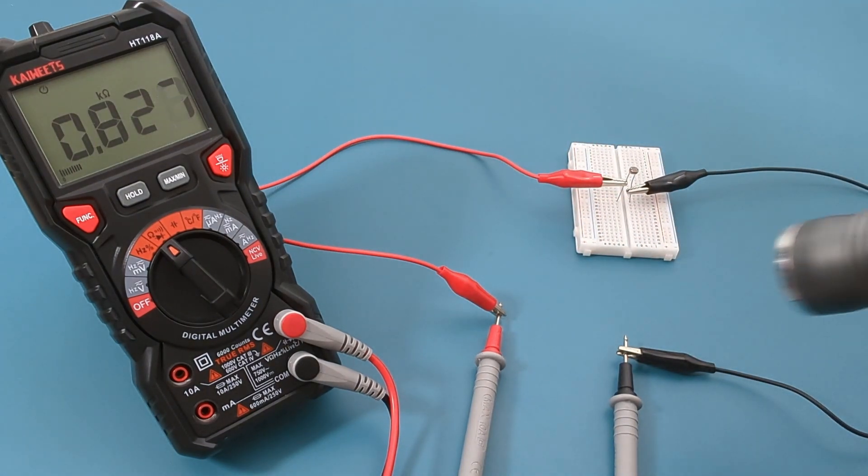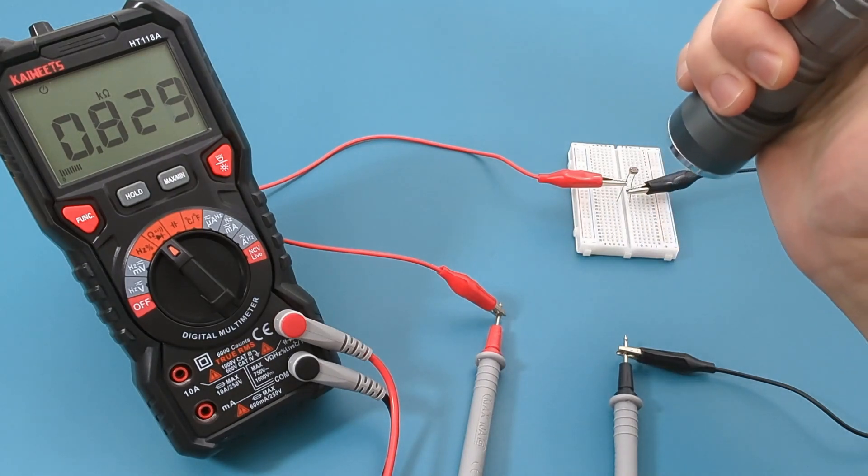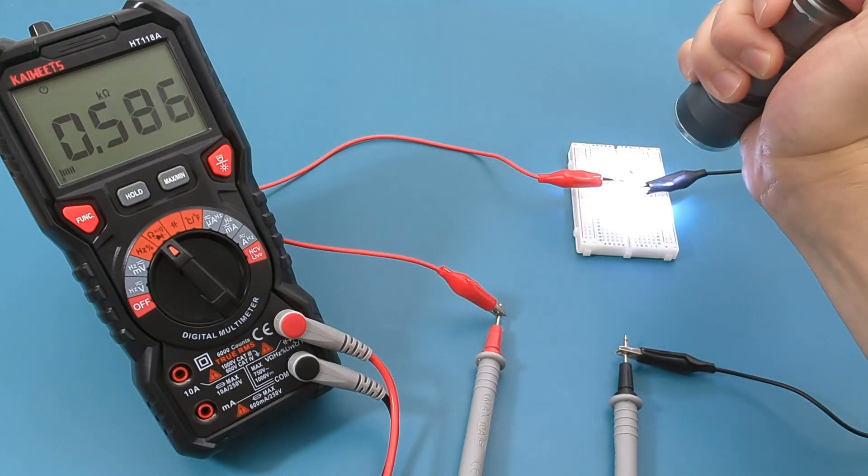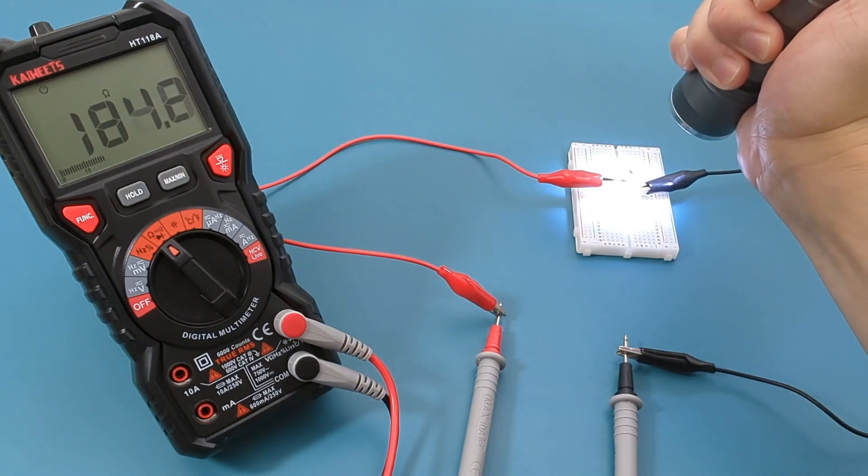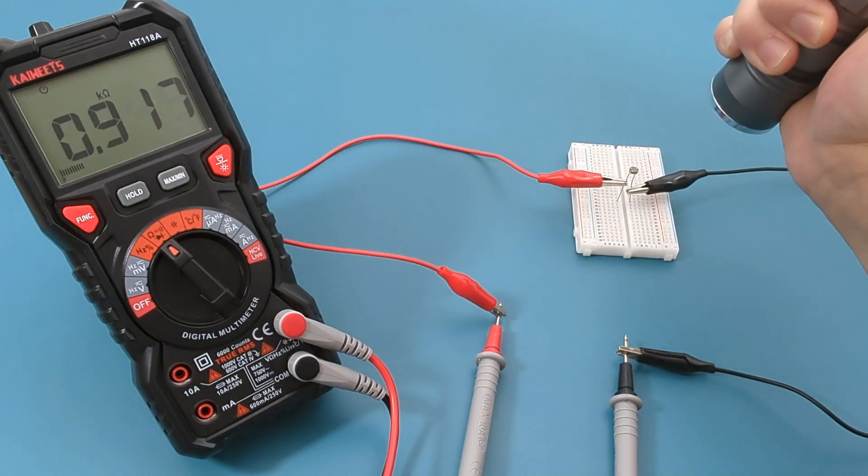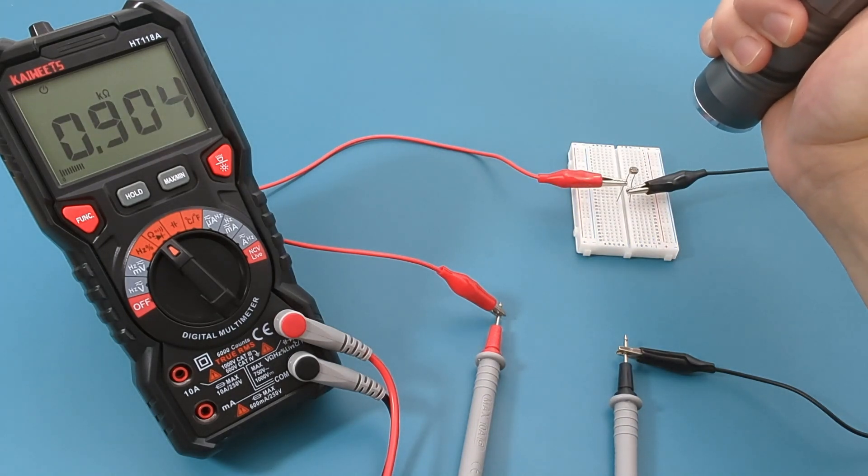Let's do this experiment using a flashlight. When I shine light on the LDR, the resistance decreases further. When I turn off the flashlight, the resistance increases.